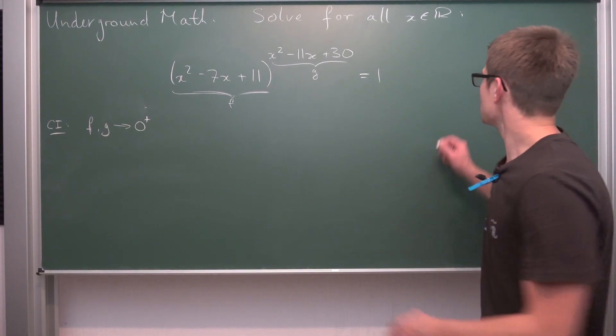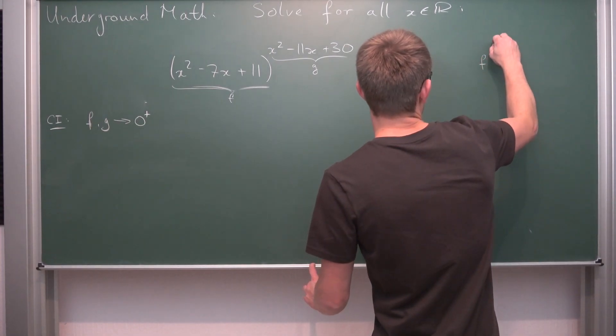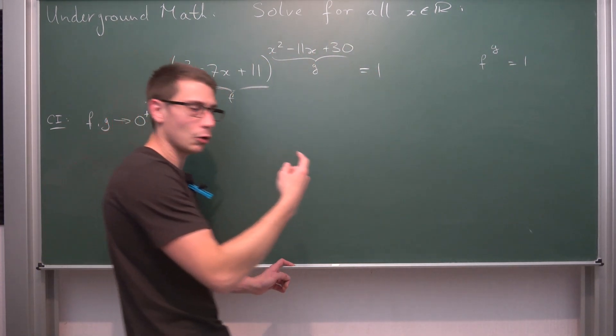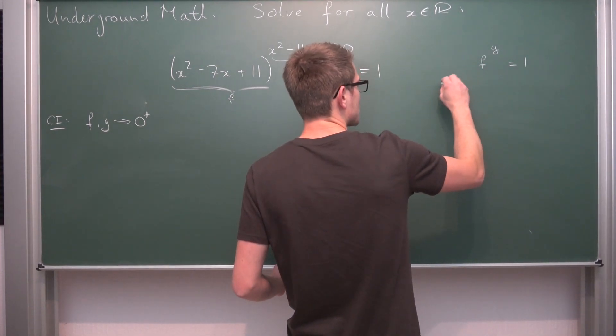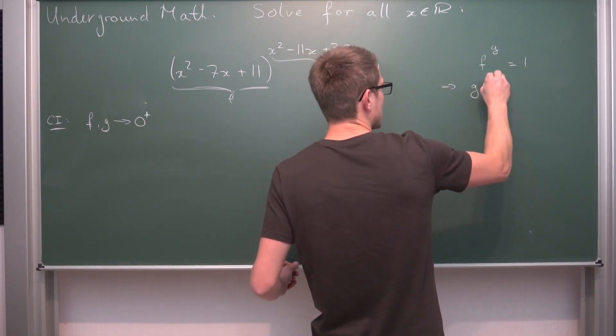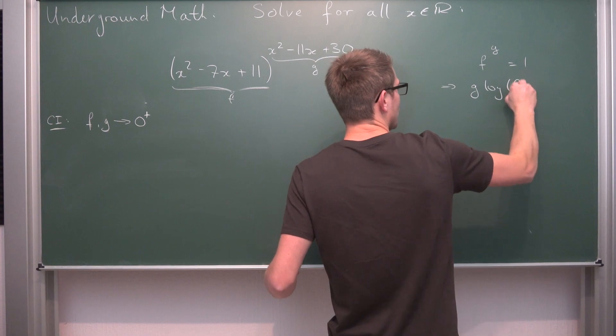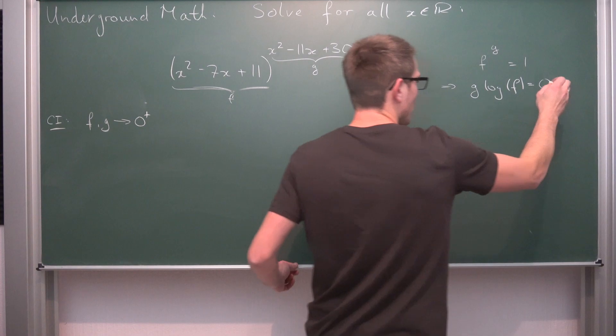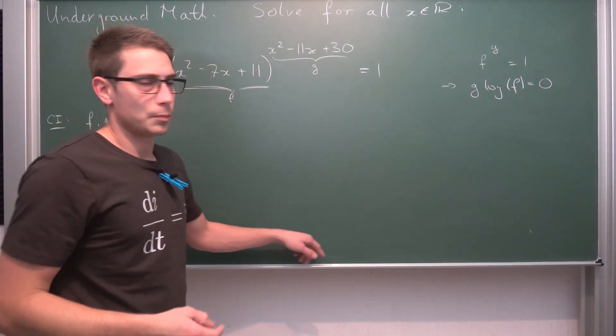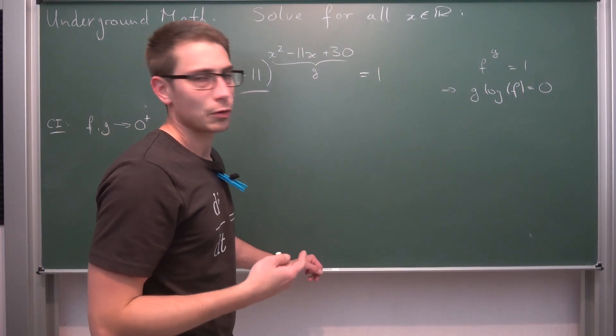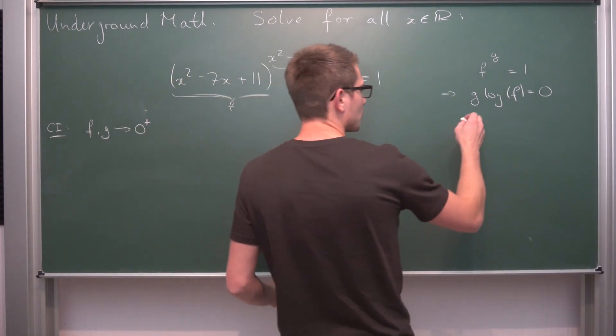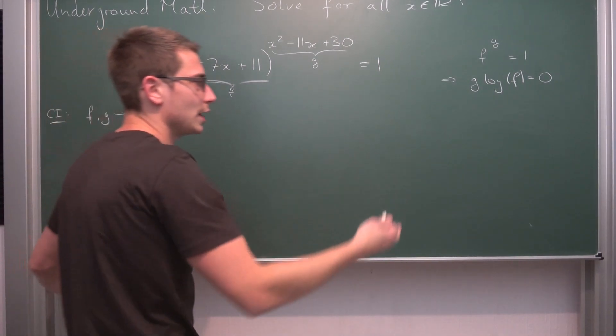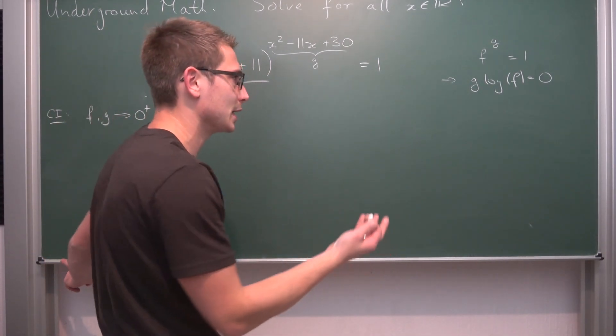Other than that, this is an f to the g situation equal to 1. If we take logarithm, the natural log on both sides, we're going to get g times the natural log of f is equal to... log of 1 is 0. Now the product is 0 if and only if one of the parts is equal to 0 in the multiplication.